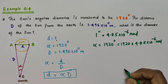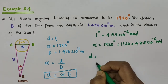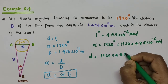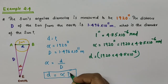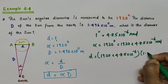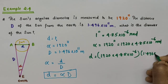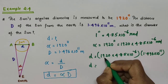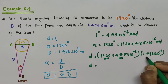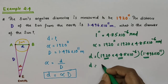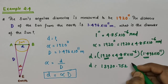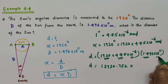So the diameter of the sun, small letter d, equals alpha × D = 1920 × 4.85 × 10⁻⁶ × 1.496 × 10¹¹. Performing the multiplication 1920 × 4.85 × 1.496 gives 13930.752, and combining 10⁻⁶ × 10¹¹ gives 10⁵.